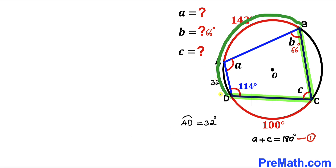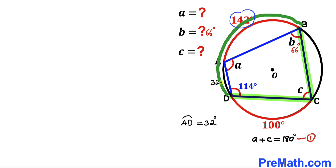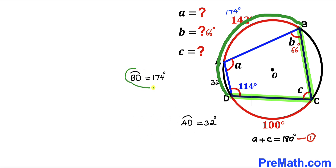Now let's focus on arc BD. Arc BD equals arc AB plus arc AD, which is 142 degrees plus 32 degrees. That gives us arc BD equal to 174 degrees.